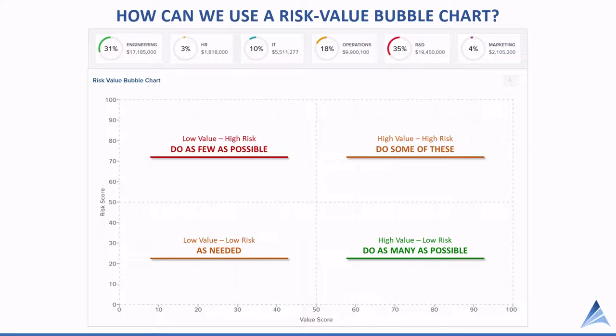So how can we use a risk value bubble chart? That upper left quadrant represents your low value, high risk projects. In general, you want to do as few of those as possible. You don't want to invest in projects that are of low value yet are risky to complete — they're a drain on the organization. There may be cases where they're mandatory, safety related, or compliance related, but in general, do as few of those as possible.